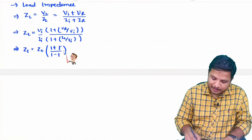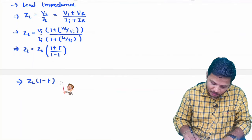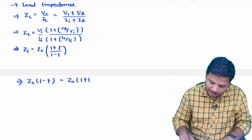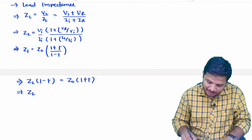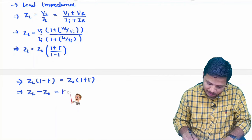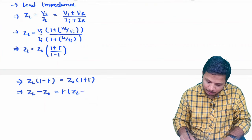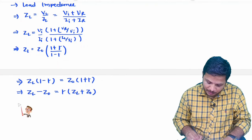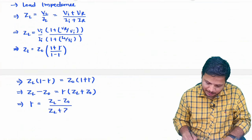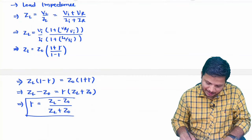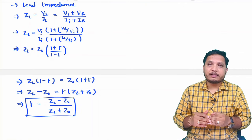Simplifying in terms of reflection coefficient by cross multiplication: ZL·(1 − ρ) = Z0·(1 + ρ). Expanding and collecting reflection coefficient terms on one side: ZL − ZL·ρ = Z0 + Z0·ρ, which gives ZL − Z0 = ρ·(ZL + Z0). Therefore, the reflection coefficient ρ = (ZL − Z0) / (ZL + Z0). This is the essential formula for calculating reflection coefficient from load impedance and characteristic impedance.